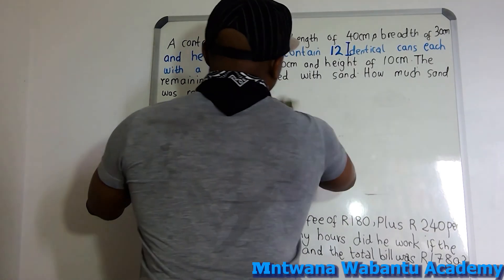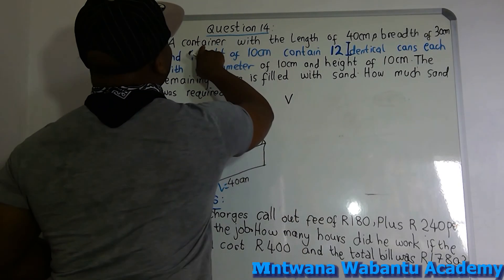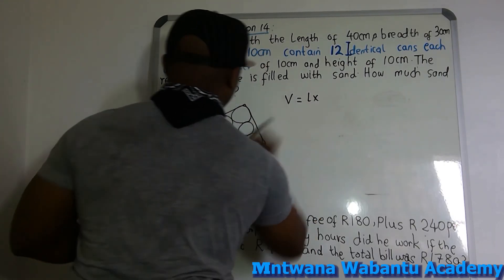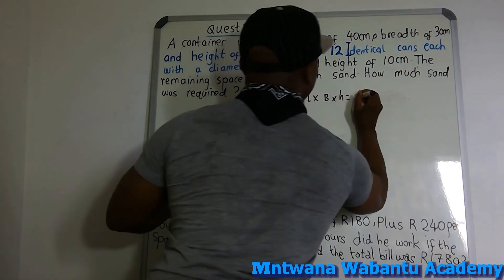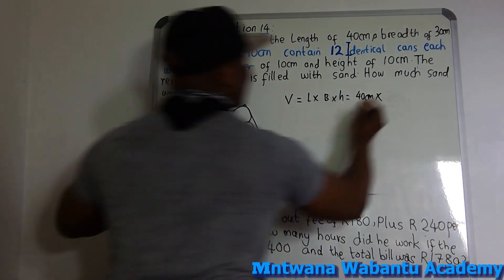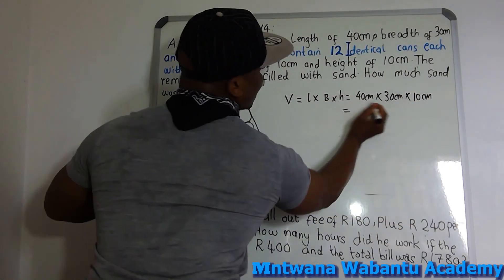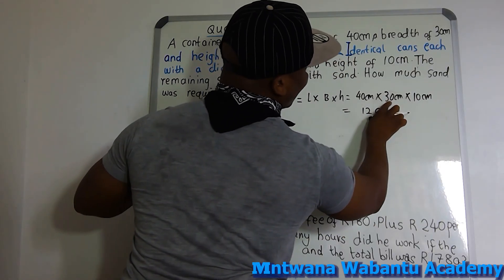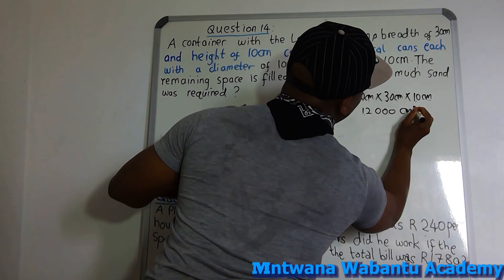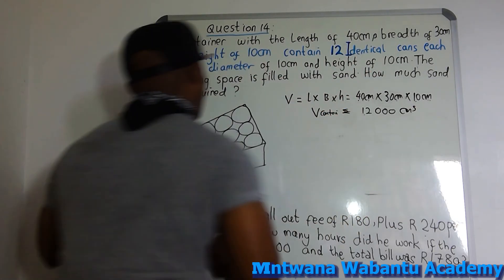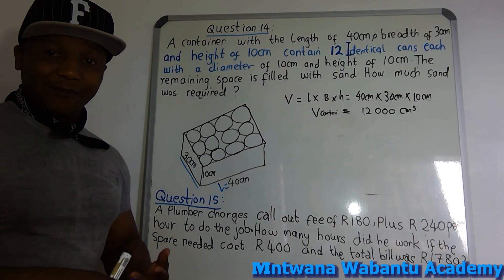Let's go. Volume of the container equals length times breadth times height. Length is 40 cm, breadth is 30 cm, height is 10 cm. So: 40 times 30 times 10. That gives us 12,000 cubic centimetres — because 4 times 3 equals 12, with three zeros from the tens, giving 12,000 cm³.